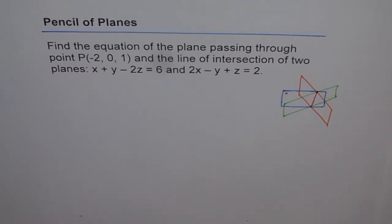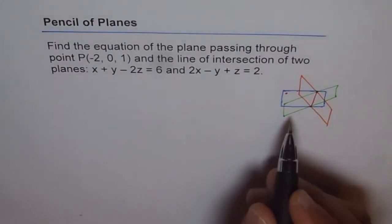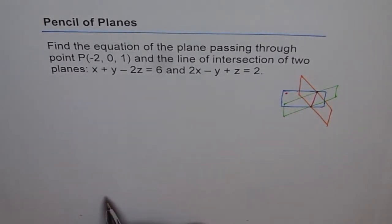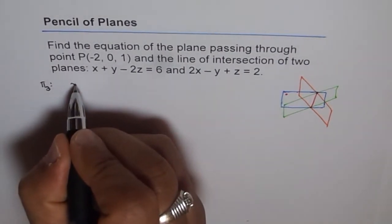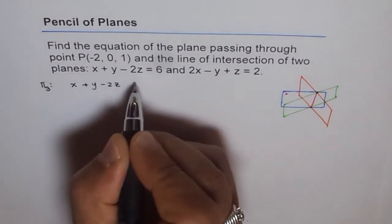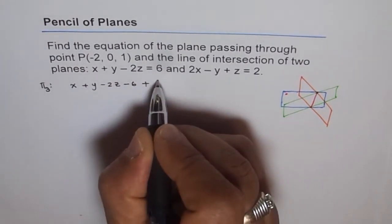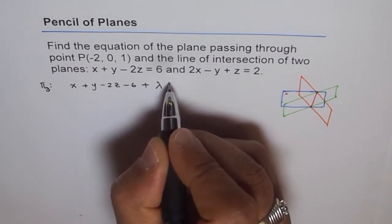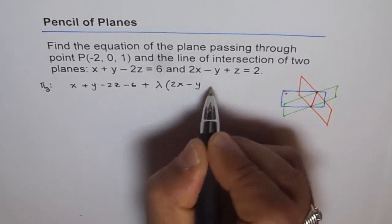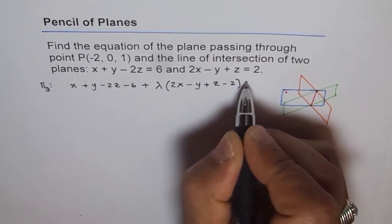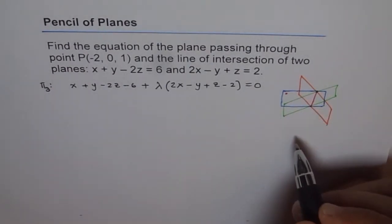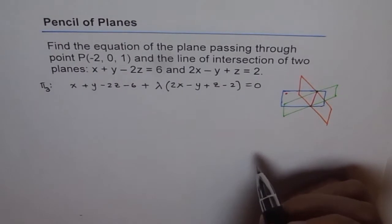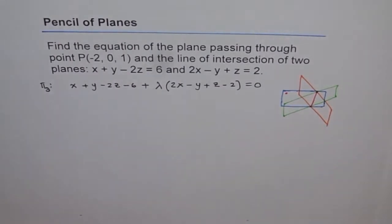How do we solve these kinds of problems? When we have a pencil of planes, we can always write the equation of that plane as a linear combination of the two given planes. For example, plane π3 can be written as: (x + y − 2z − 6) plus lambda times (2x − y + z − 2) equals 0. This linear combination always contains the line of intersection.